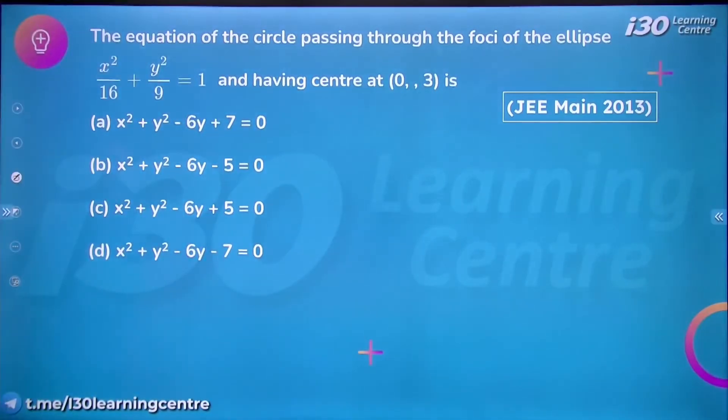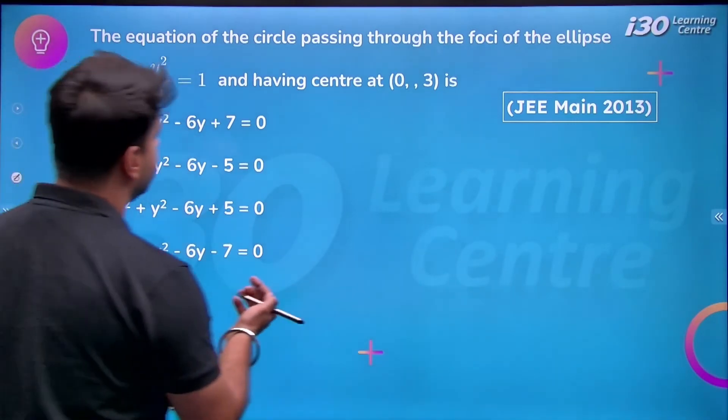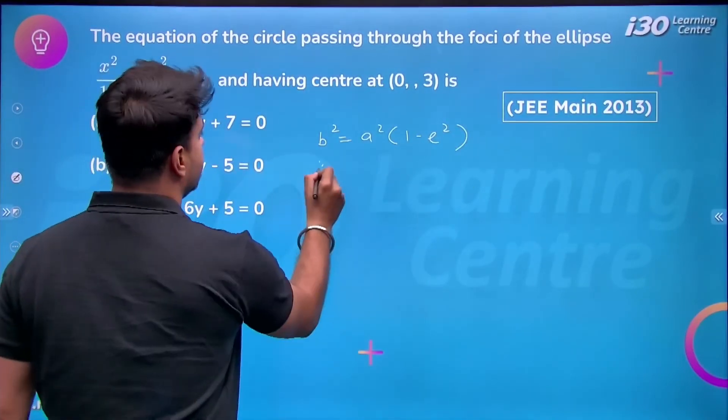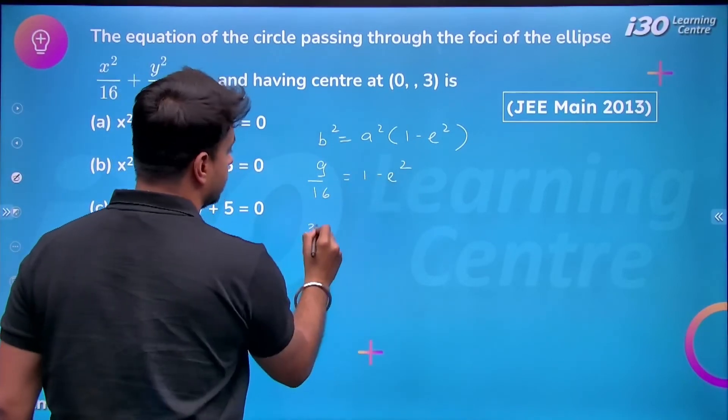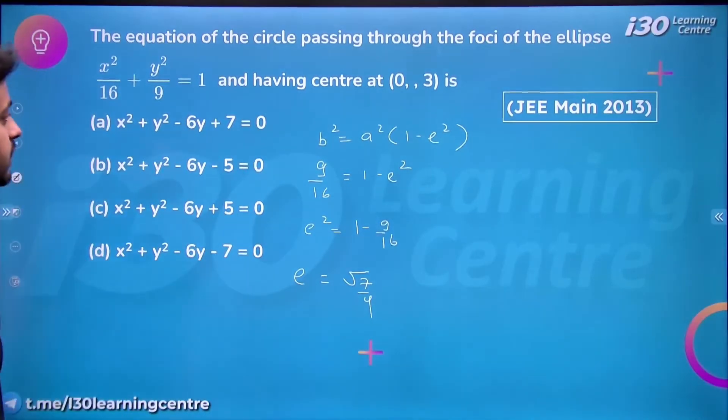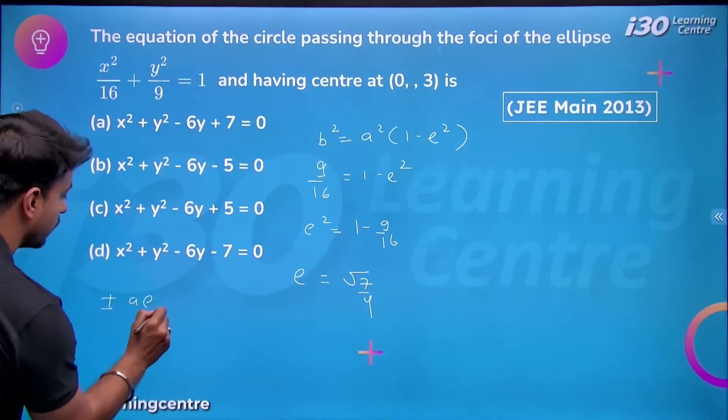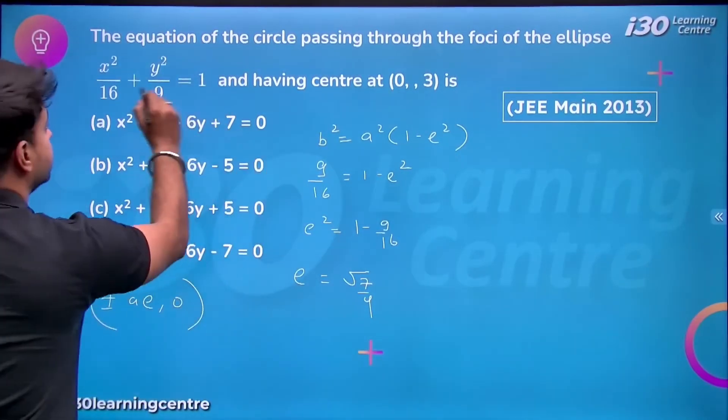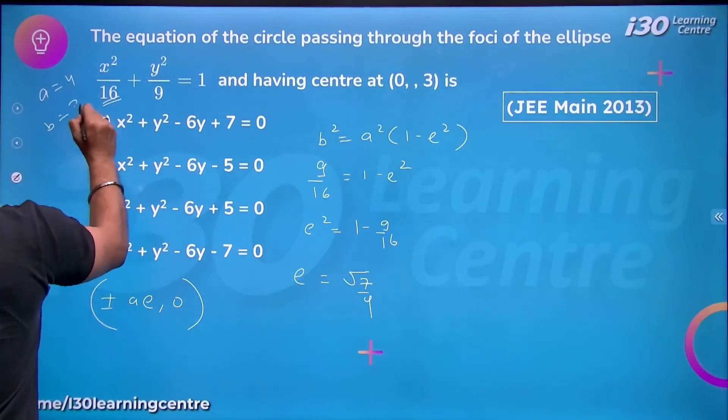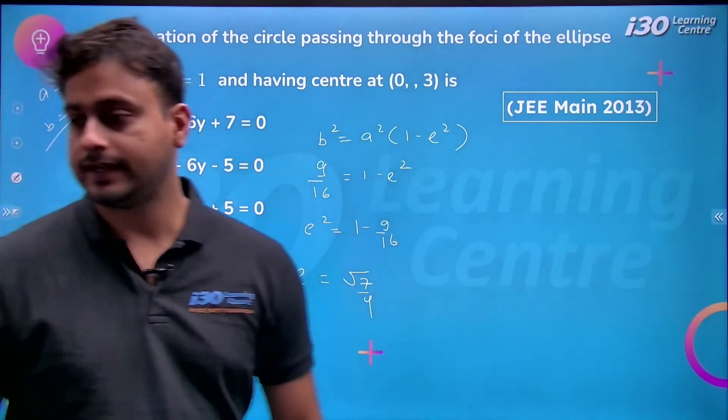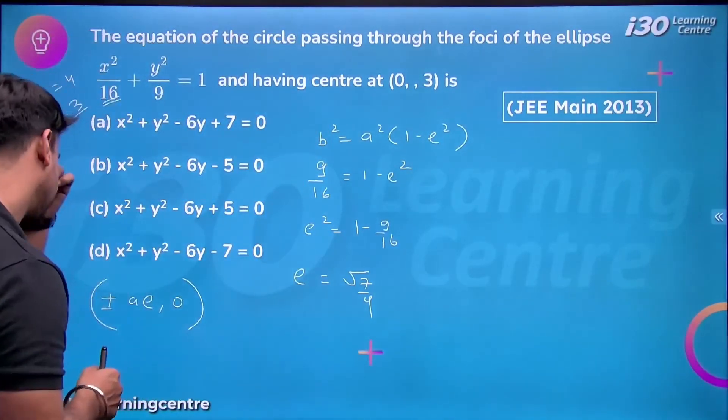The equation of the circle passing through the foci of the ellipse x²/16 + y²/9 = 1 having center at (0, 3). First I need to find the eccentricity to get the foci. Everyone knows b² = a²(1 - e²). So 9/16 = 1 - e², that means e² = 1 - 9/16, so e = √7/4. I want to get the foci. Everyone knows foci is (±ae, 0). The circle passes through the foci. Here a is 4 and b is 3, clearly visible.